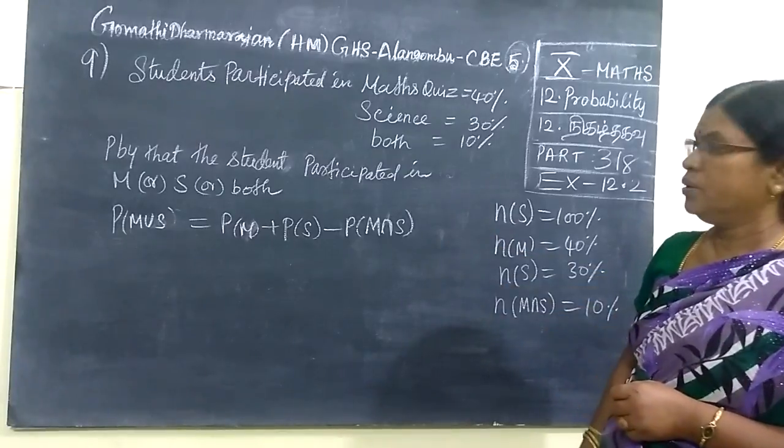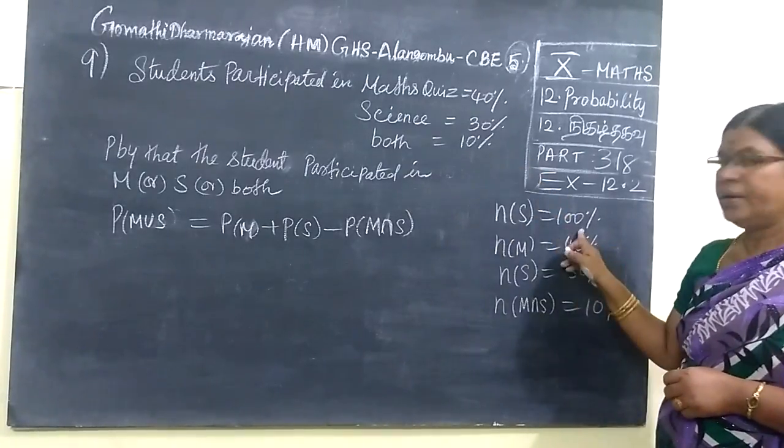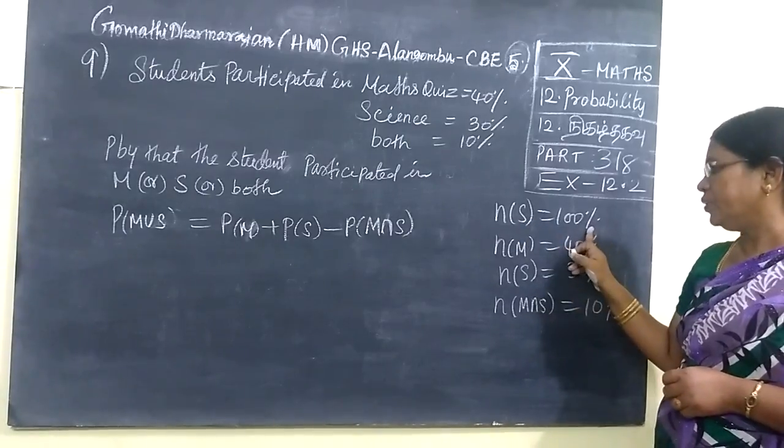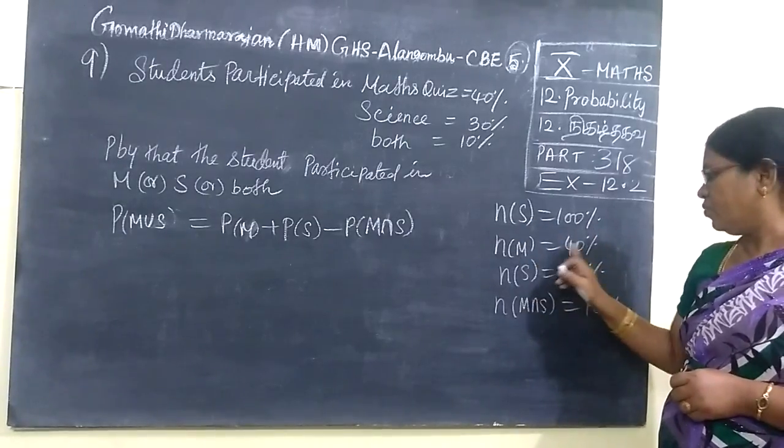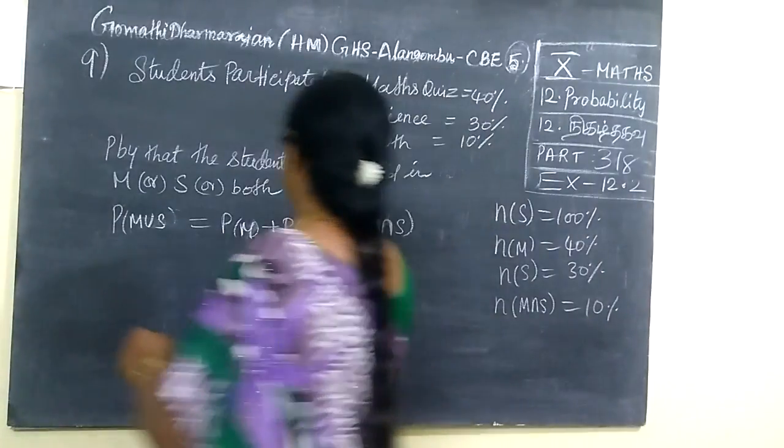So 10% of students participated in both. So percentage means 100, so n(S) = 100. So math 40, science 30, both 10%. We use the union formula.